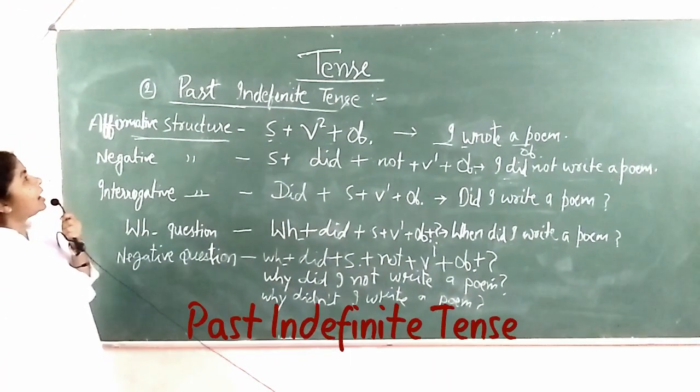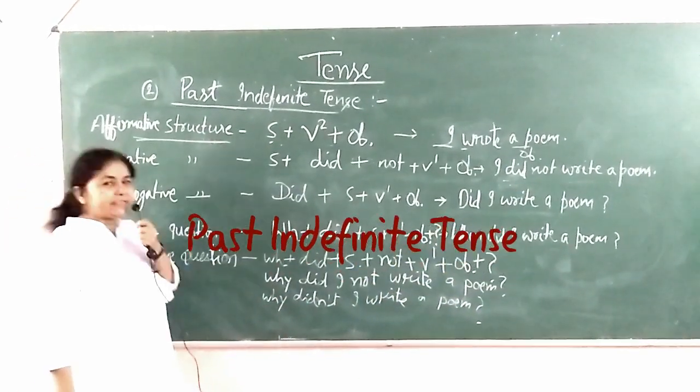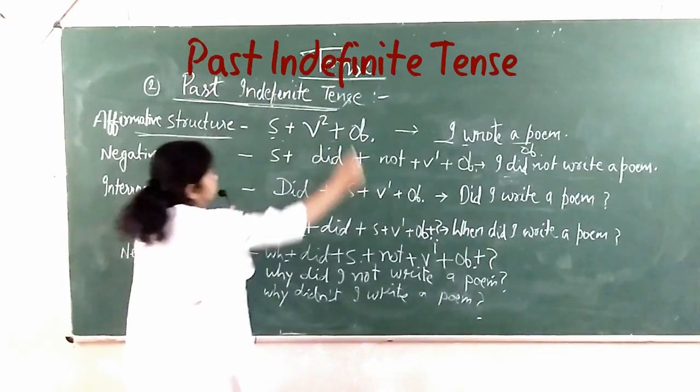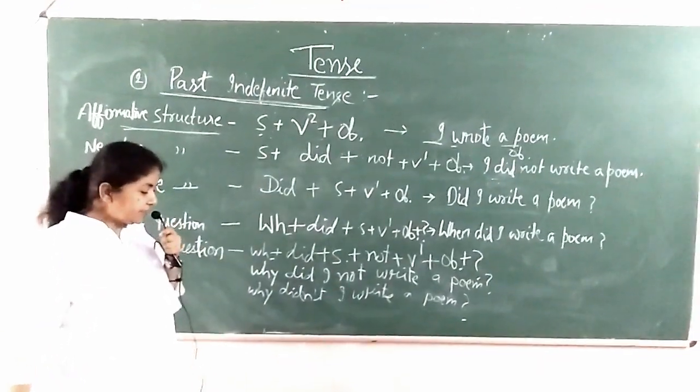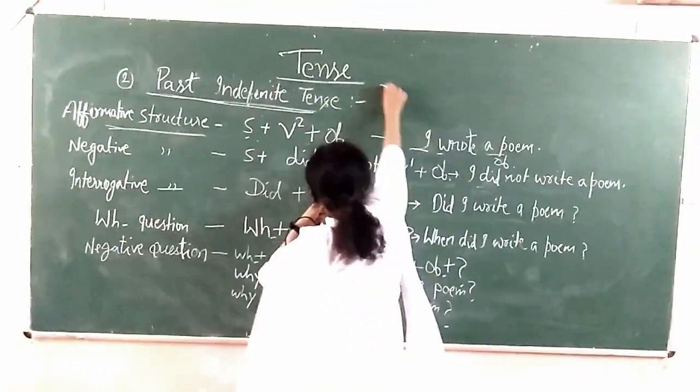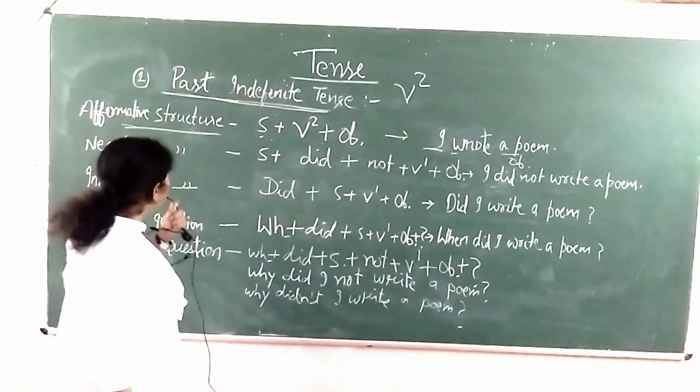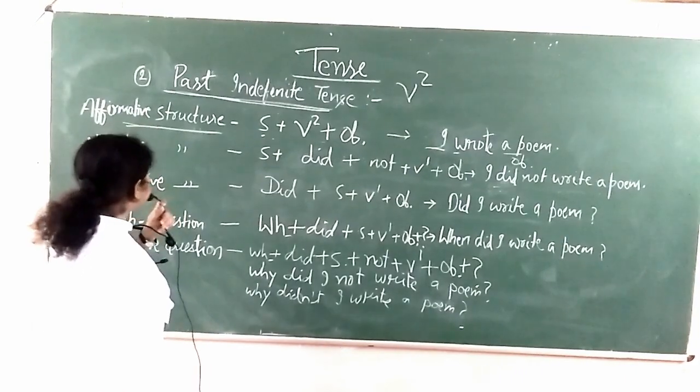Today we read about present indefinite tense. Today we are going to learn past indefinite tense. In past indefinite tense we always use V2. V2 is used in all types of past indefinite tense.